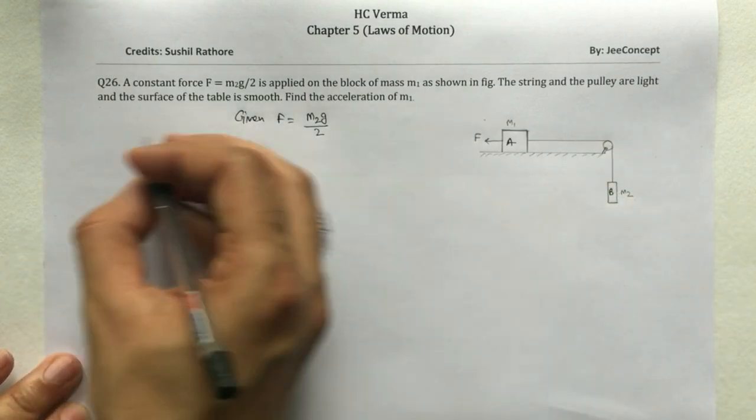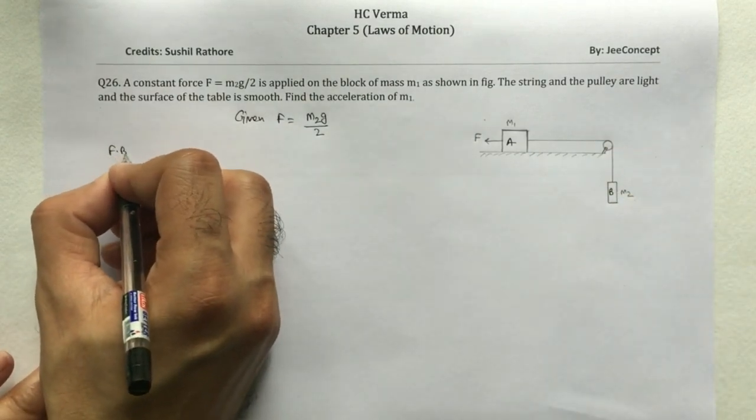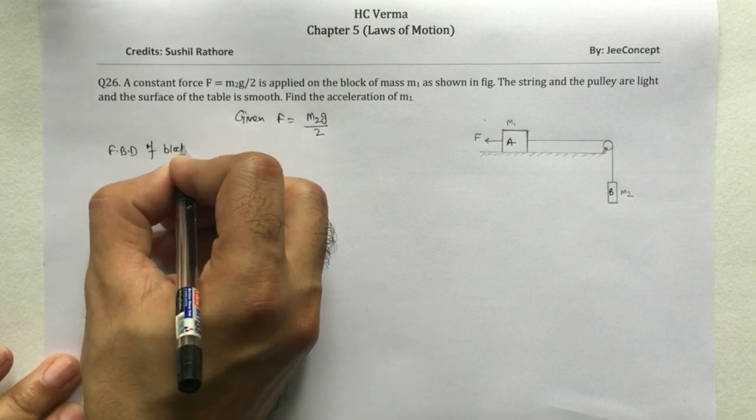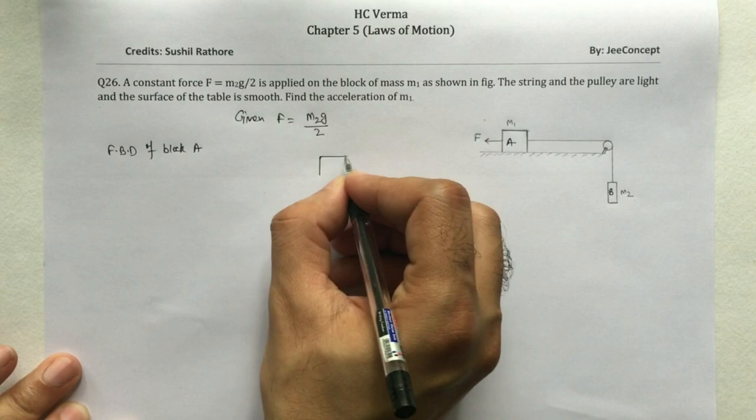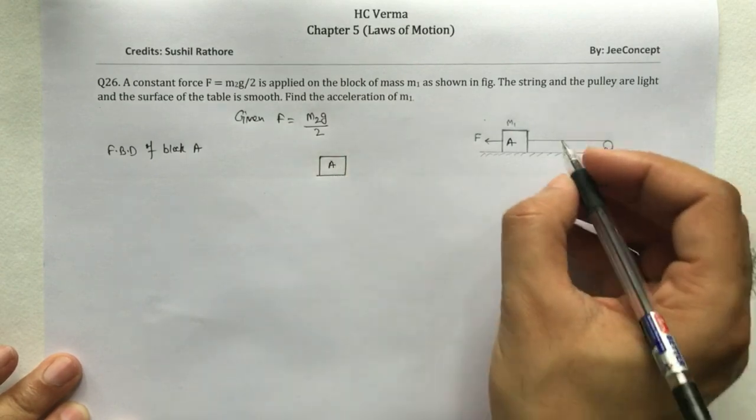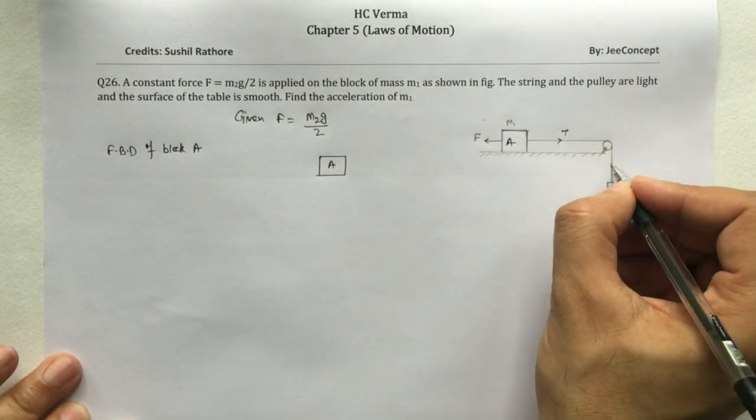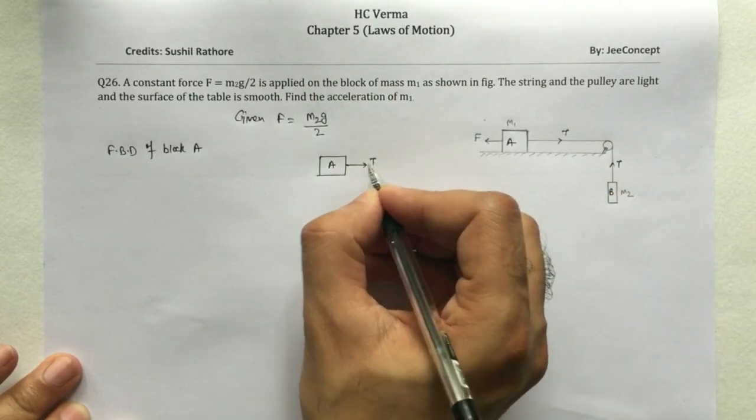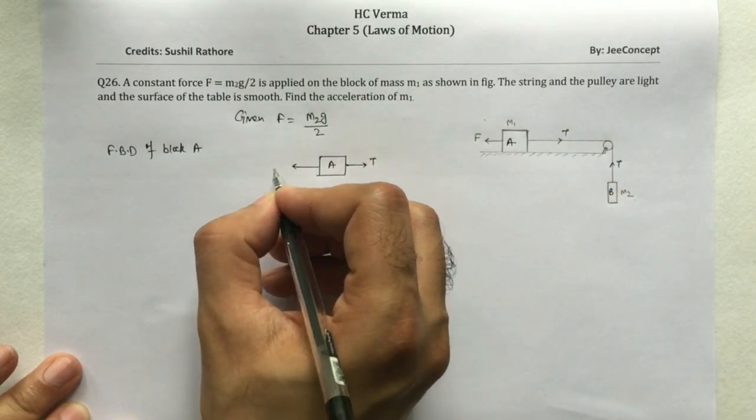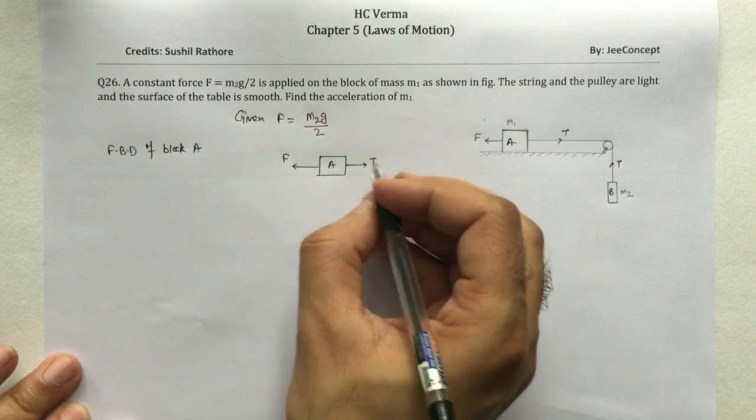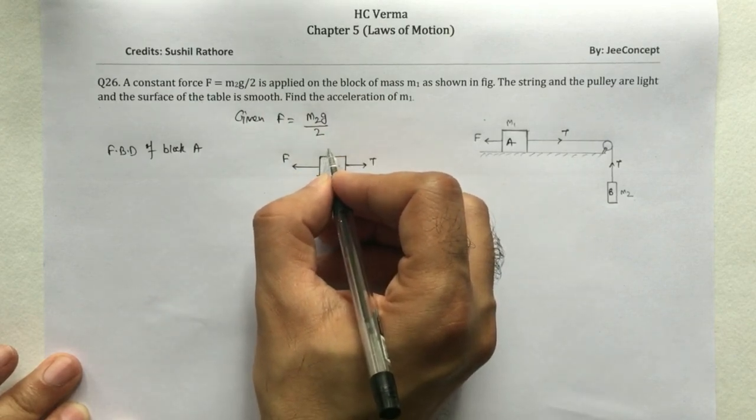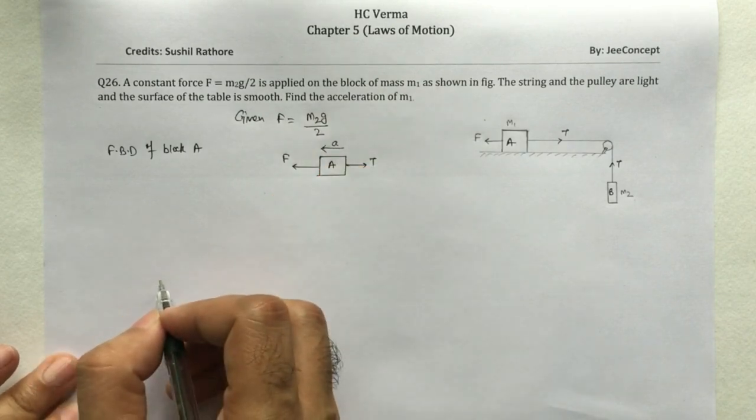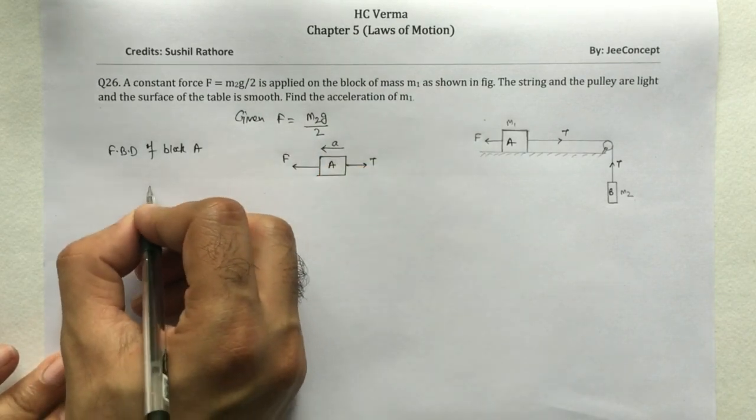FBD of block A would be: this is block A, there is a tension in the string here and the same tension T is here. So that means T here, F is here, and say the system is moving with an acceleration a in the left hand direction. The equation will become F - T = m1*a, so this is equation 1.